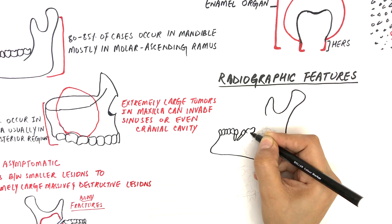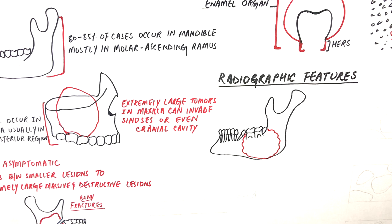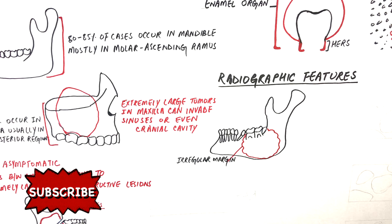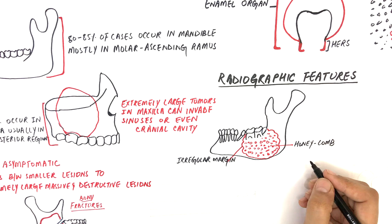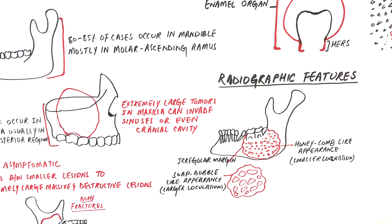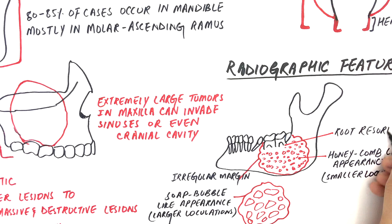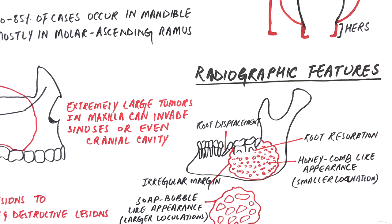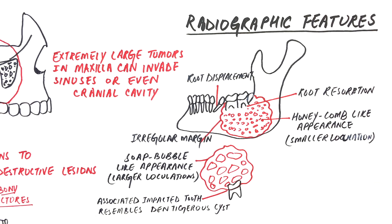Coming to the radiographic features: under radiography, ameloblastomas present as a multilocular radiolucency with an irregular and scalloped bony margin. The lesion may either have smaller loculations giving a honeycomb-like appearance, or it may have larger loculations giving a soap bubble-like appearance. Resorption and displacement of roots of teeth are often observed in larger ameloblastomas, and the lesion can sometimes cause impaction of associated teeth, resembling a dentigerous cyst.